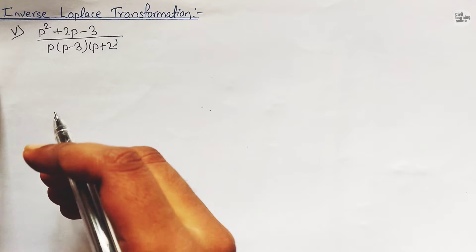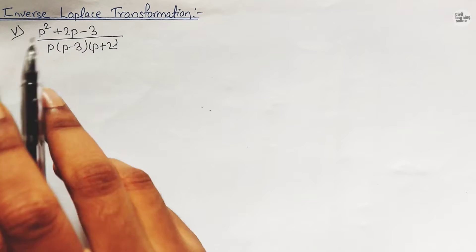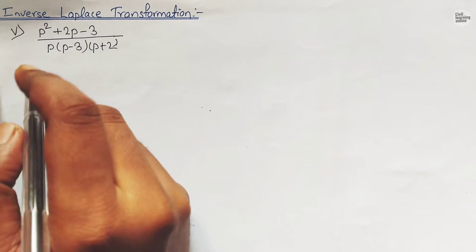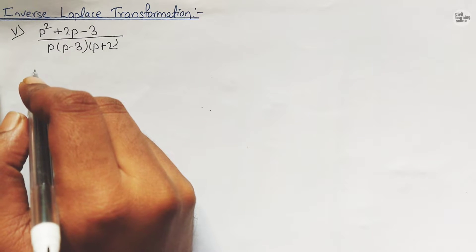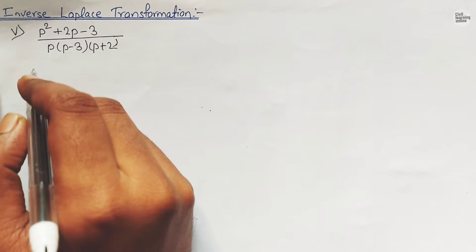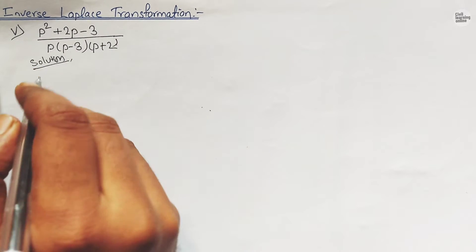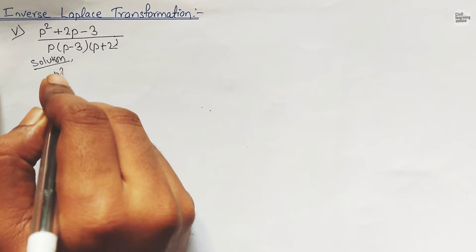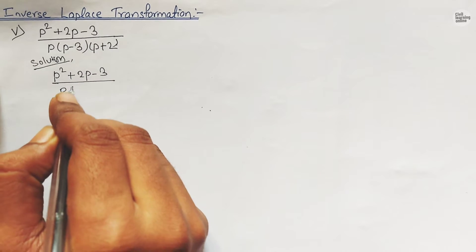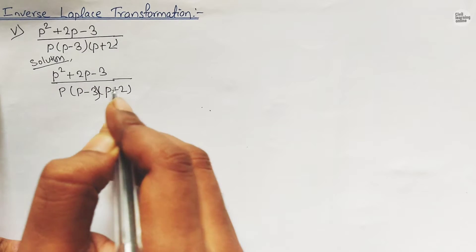Our very first step is to look for the denominator. As I mentioned, these are three linear factors, so we have to split the numerator into different terms by applying the concept of partial fraction. If you haven't watched my series on partial fraction, the link is in the description. I'm going to write the solution: we have (p² + 2p - 3) / [p(p - 3)(p + 2)].